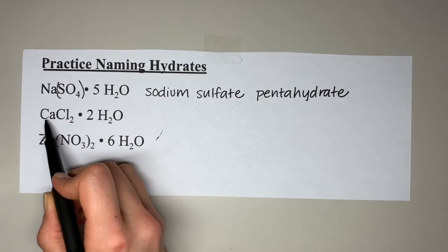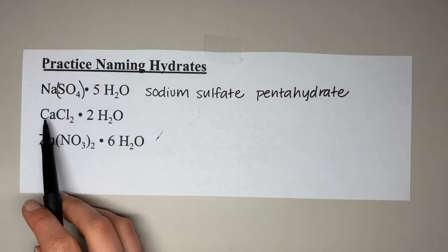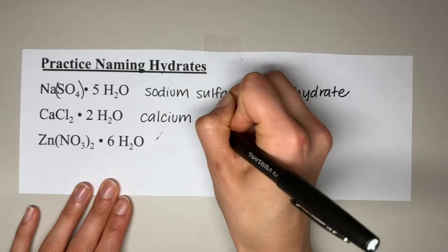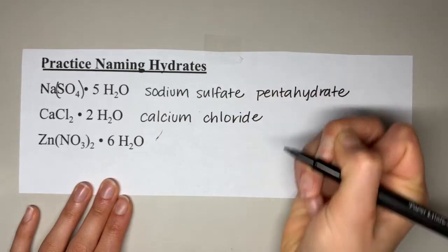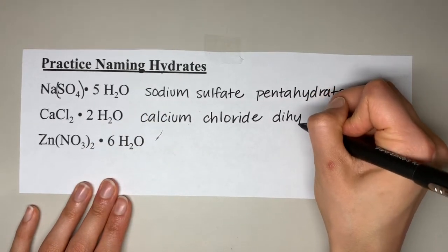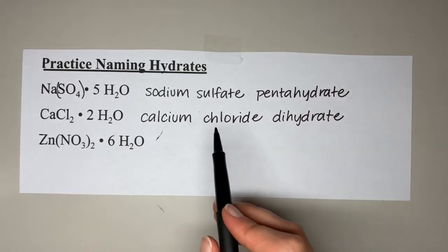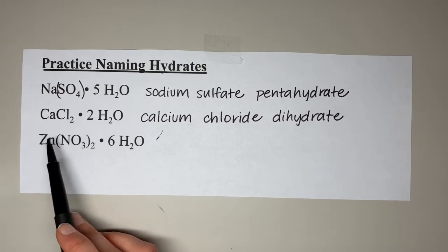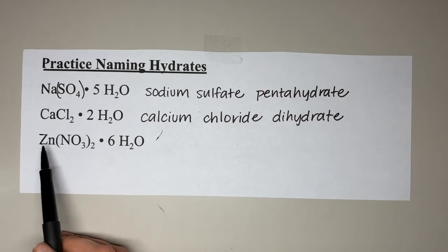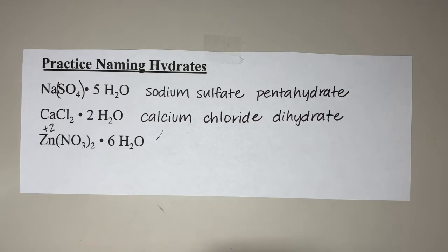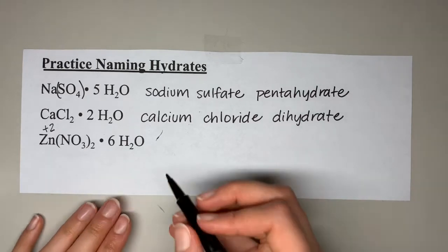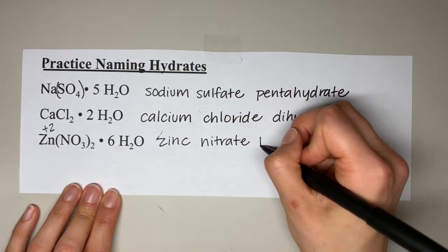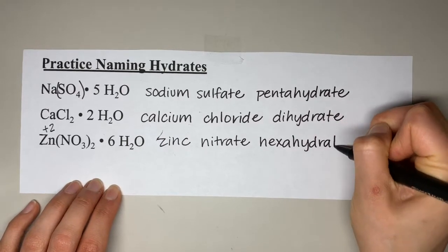For the next practice problem, calcium is a metal, not a transition metal, in group two, with no polyatomic. The answer is calcium chloride dihydrate. For the last practice problem, zinc is technically a transition metal but is always +2 and cannot change, and there is a polyatomic (nitrate). The prefix for six is 'hexa,' so the answer is zinc nitrate hexahydrate.